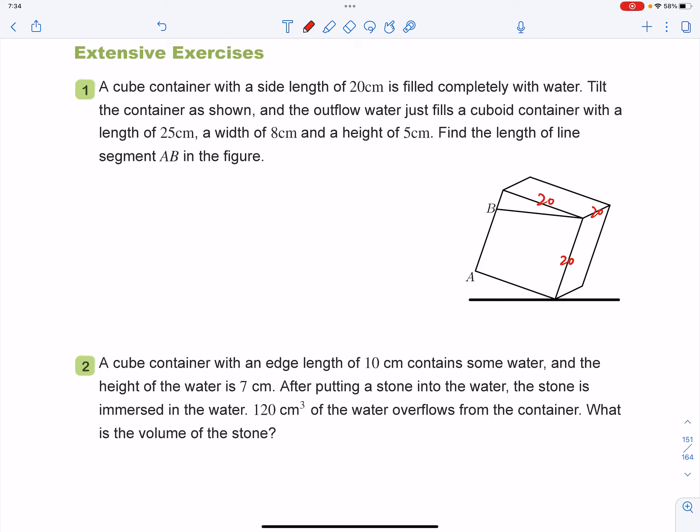Tilt the container as shown and the outflow water just fills a cuboid container with a length of 25 centimeters, a width of 8 and a height of 5. Find the length of line segment AB in the figure.